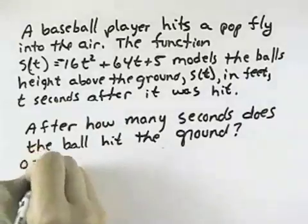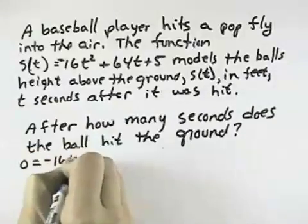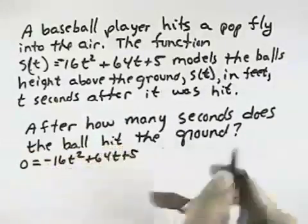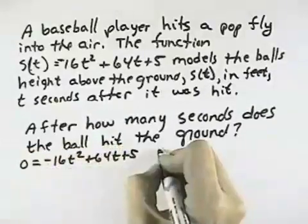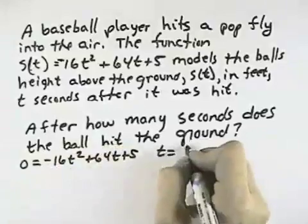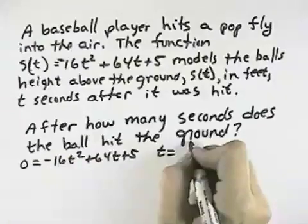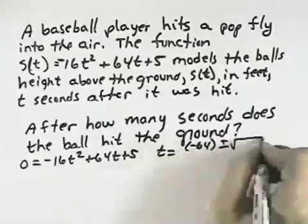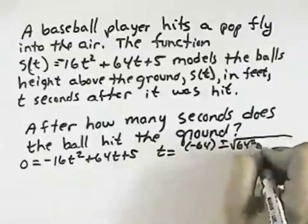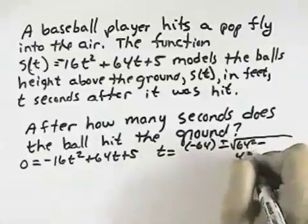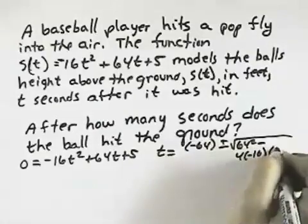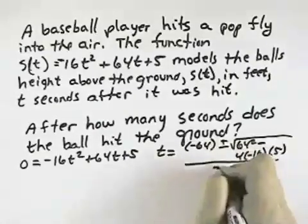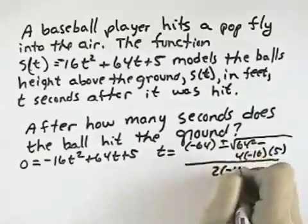The ground would be zero height, so 0 = -16T² + 64T + 5. Using the quadratic formula, that means T equals negative B, which is negative 64, plus or minus the square root of 64² minus 4 times negative 16 for A, times 5, all over 2 times negative 16.